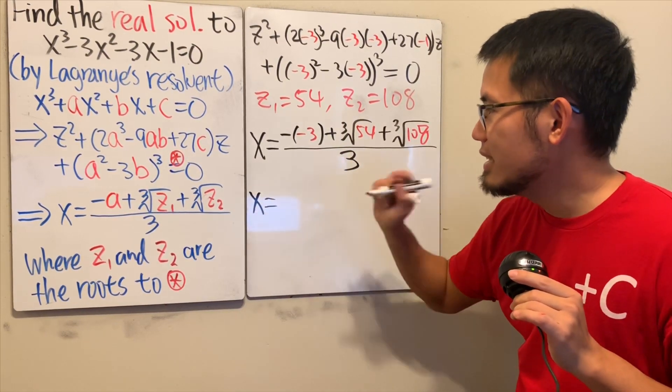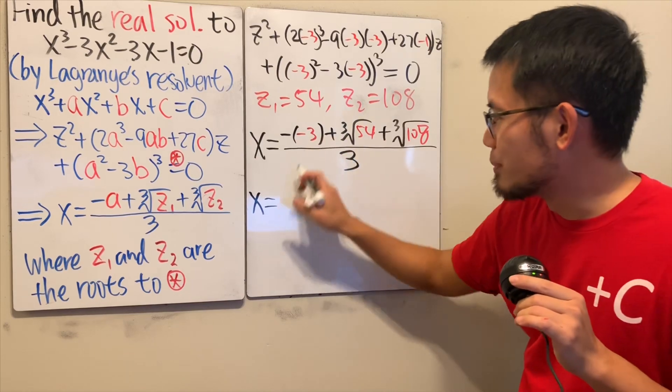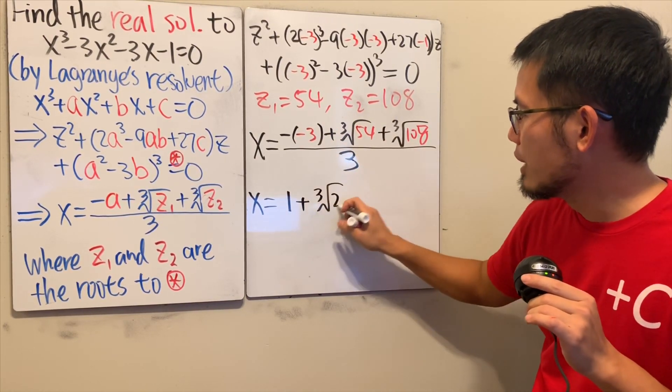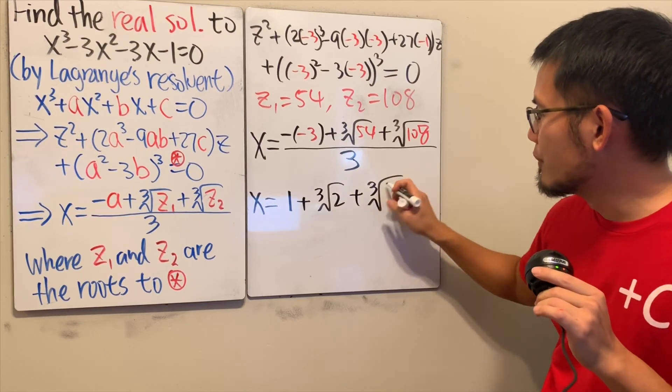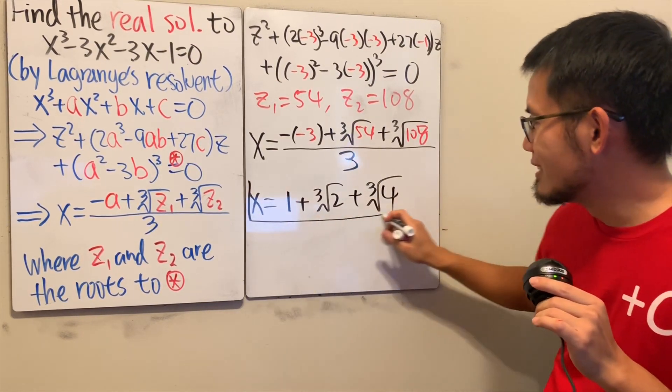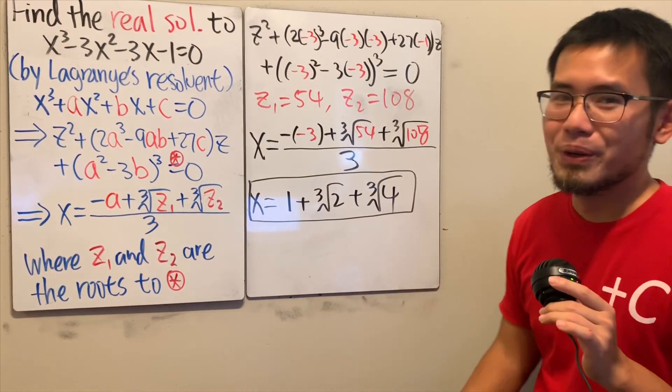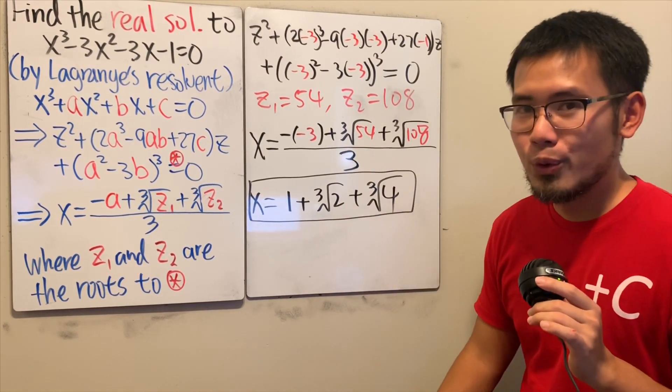Well, let me just put it down. This is 1 + ∛2 + ∛4. Of course, this is the same answer we got earlier. Man, isn't this so cool? Both methods are so cool.